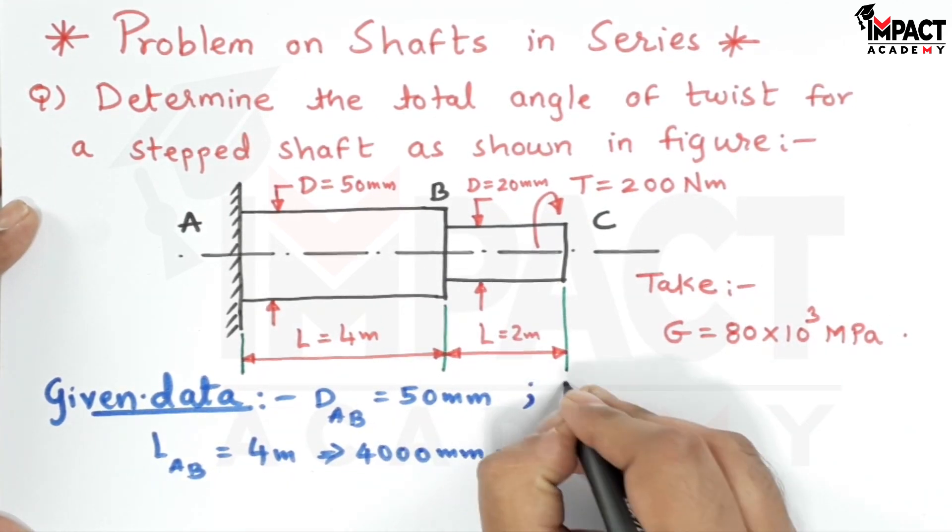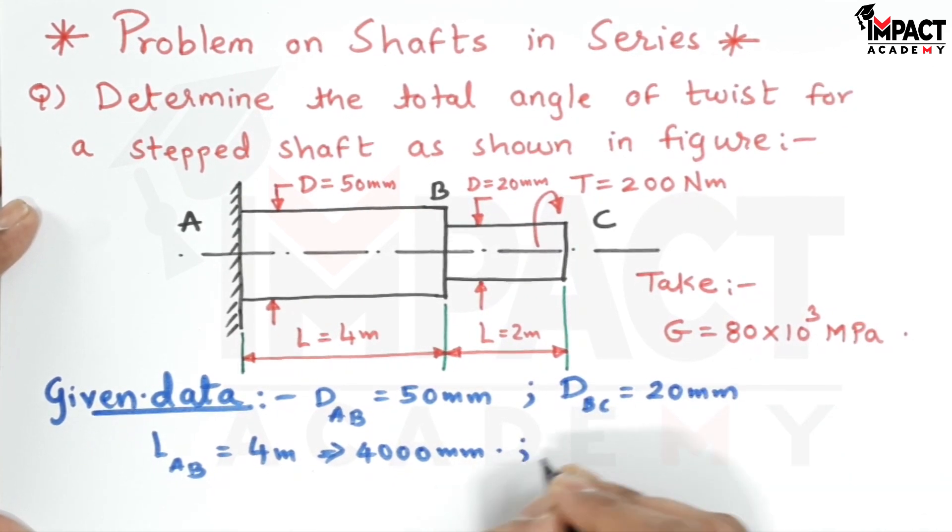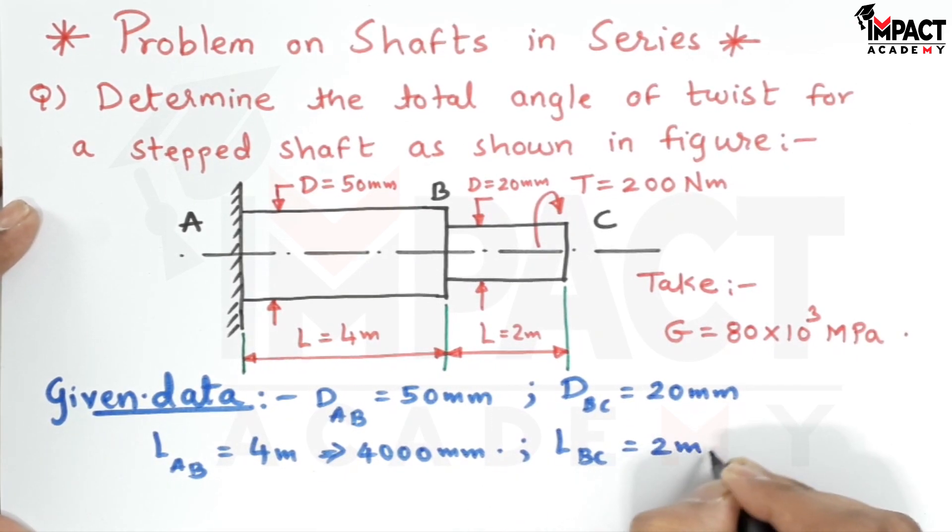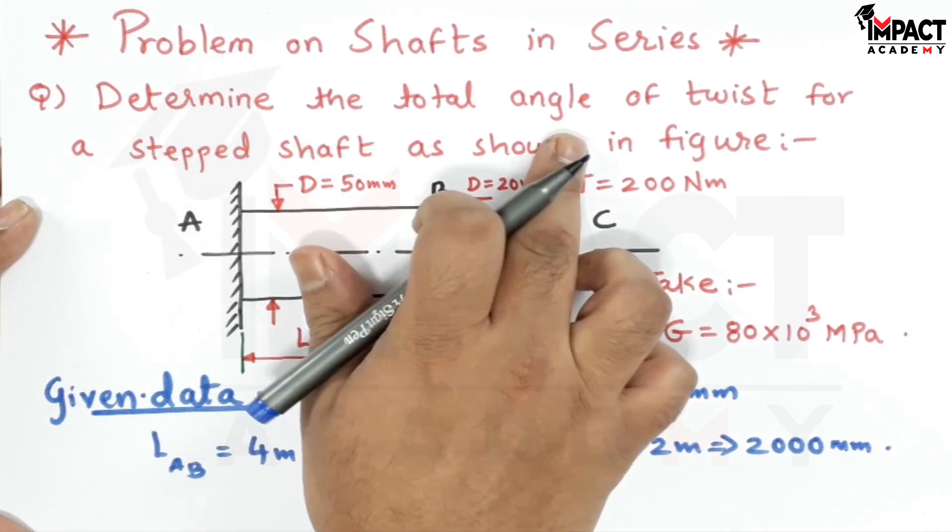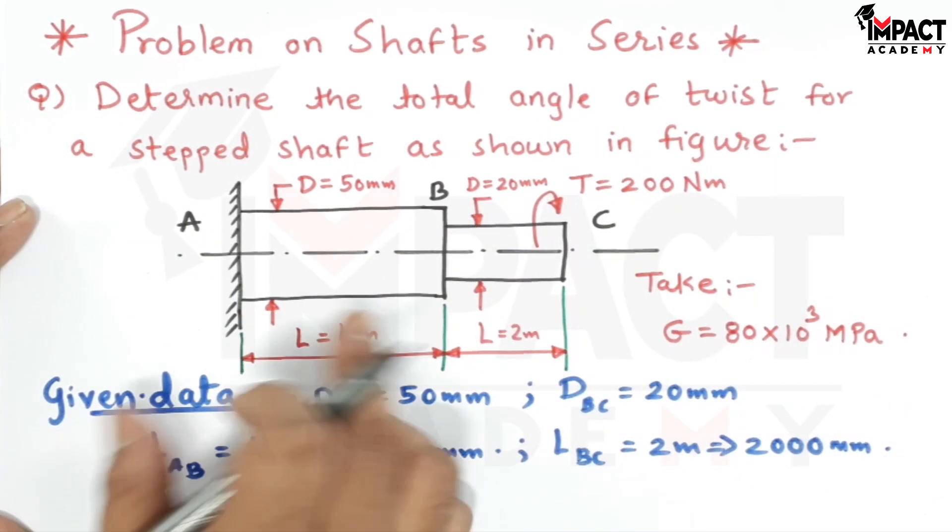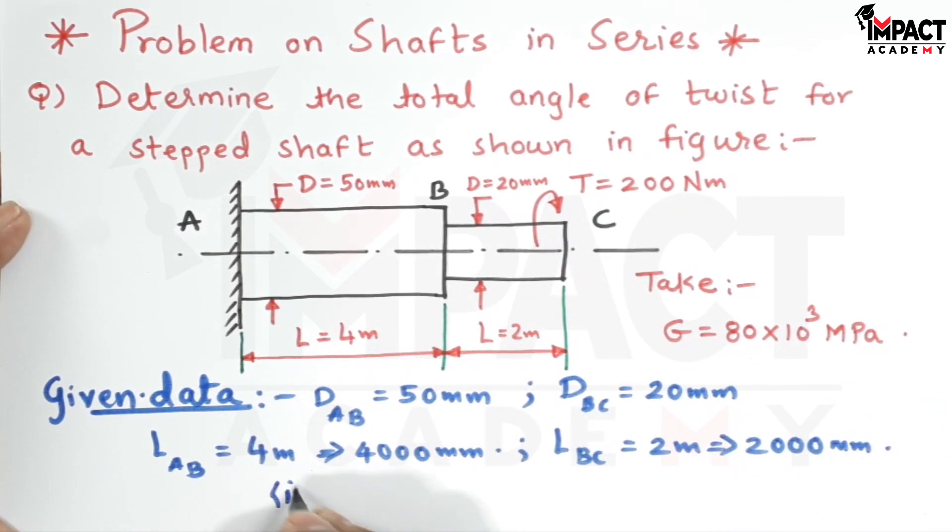The corresponding length is L_AB=4m, which is 4000mm. The diameter of portion BC is D_BC=20mm, and the length is L_BC=2m or 2000mm.